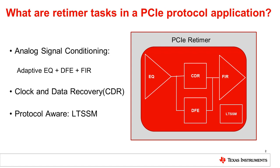The primary responsibility of a PCIe retimer is to compensate for signal loss and distortion due to the transmission media. One way is by working in the analog domain to electrically compensate for signal loss. A retimer can utilize an adaptive equalizer and a decision feedback equalizer, or DFE, to compensate for signal loss, noise, and crosstalk. It can also provide pre- or post-emphasis at the transmitter to improve signal conditioning.